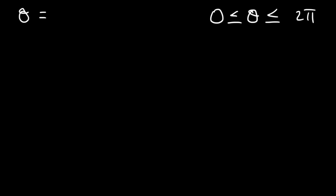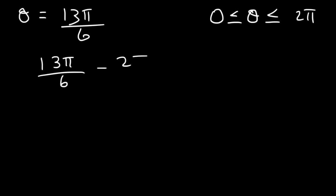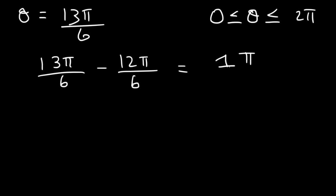Now find a coterminal angle that's between 0 and 2 pi. Let's say the angle is 13 pi over 6. Now 13 pi over 6 is more than 2 pi because 12 pi over 6 equals 2 pi. So we subtract by 2 pi, which is the same as 12 pi over 6. Getting common denominators, 13 minus 12 is 1, so this equals pi over 6, which is 30 degrees. 2 pi is 360.